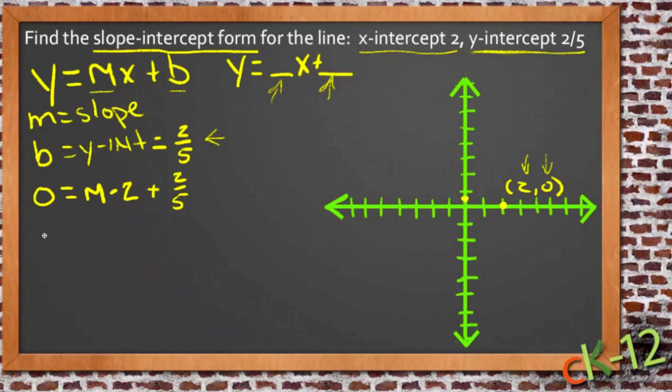We'll move the two-fifths to the other side. So we'll have negative two-fifths equals m times 2. Divide both sides by 2. And if we're dividing a fraction by 2, that means we can double the denominator. So we'll have negative two-tenths equals m. And that reduces to negative one-fifth.